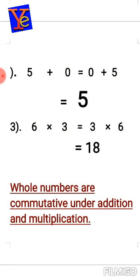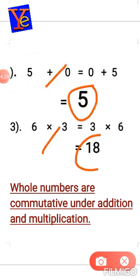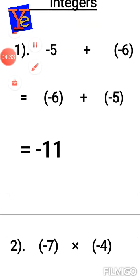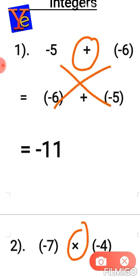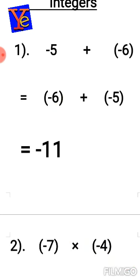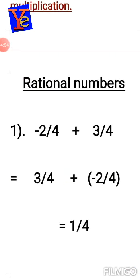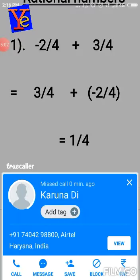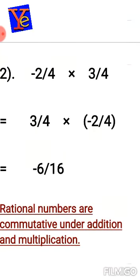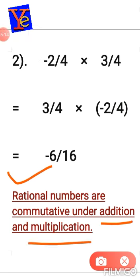To summarize: whole numbers are commutative under addition and multiplication because switching positions in addition and multiplication keeps the answer the same. Integers are also commutative under addition as well as multiplication. Rational numbers likewise are commutative under addition and multiplication, since switching positions in both operations gives the same result.